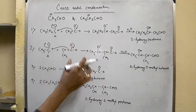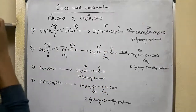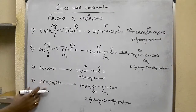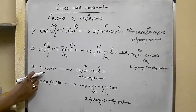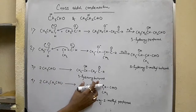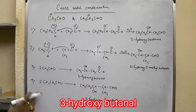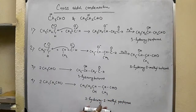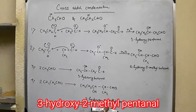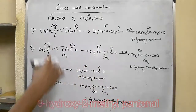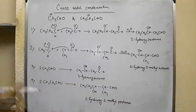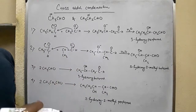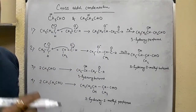Self-condensation reactions also occur: self-condensation of ethanal gives 3-hydroxybutanal, and self-condensation of propanal gives 3-hydroxy-2-methylpentanal. So we get a mixture of four different products. That is why the selection of reactants must be carefully done.